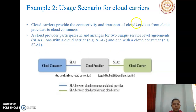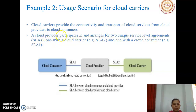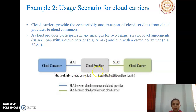The second scenario covers the cloud carrier. Cloud carriers provide connectivity and transport of cloud services from the cloud provider to the cloud consumer. A cloud provider participates in and arranges two unique service level agreements: SLA 1 with the cloud consumer, and SLA 2 with the cloud carrier. This includes a dedicated and encrypted connection from the cloud provider to the consumer, with the cloud carrier providing capability, flexibility, and functionality.